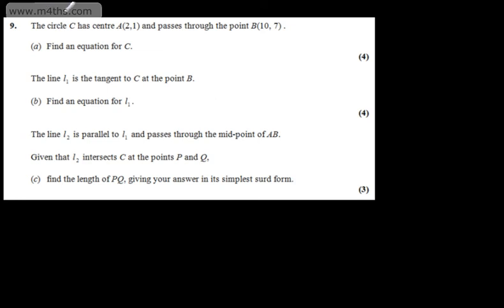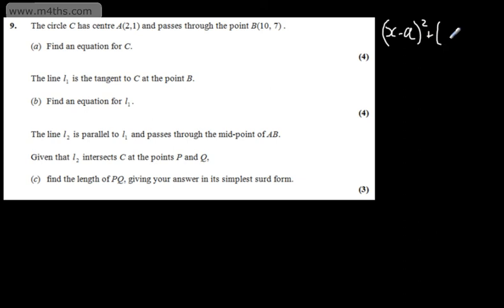This is question number 9. We're told the circle C has centre A and passes through the point B. In part A, for four marks, we're asked to find an equation for C. The equation of the circle can be given in the form (x − a)² + (y − b)² = r², which gives us a circle with centre (a, b) and a radius of r units.